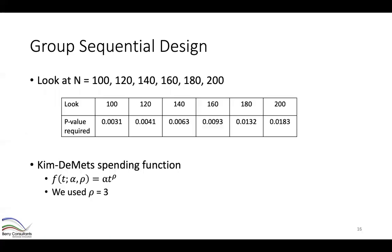Going back to our example, I'm adding group sequential looks for success every 20 subjects starting at 100 enrolled. At each interim, the table shows what p-value is required to meet the success criteria. These were constructed using a Kim-DeMets spending function, where the type one error spent at each interim is a function of available information. At the first interim, we require p < 0.0031; if we continue, that threshold relaxes, and by 200 subjects the threshold is p < 0.0183.